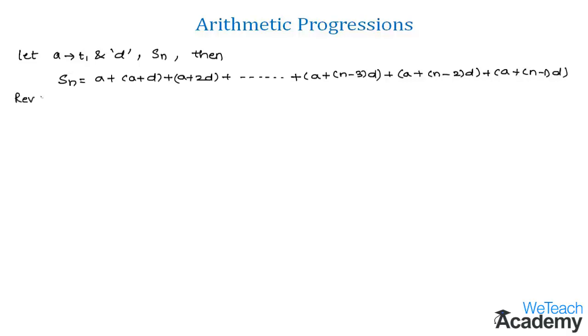So by rewriting this in reverse order we get Sn as a plus n minus 1 into d plus a plus n minus 2 into d plus a plus n minus 3 into d plus so on plus a plus 2d plus a plus d plus a.